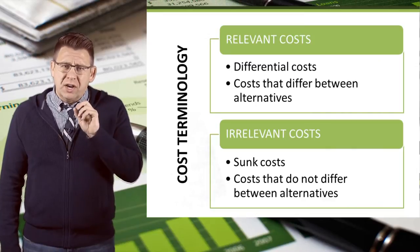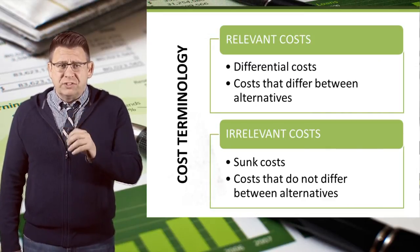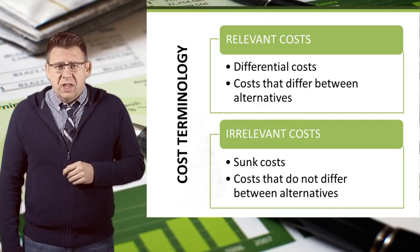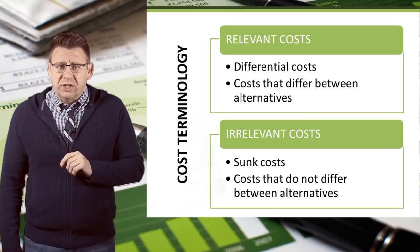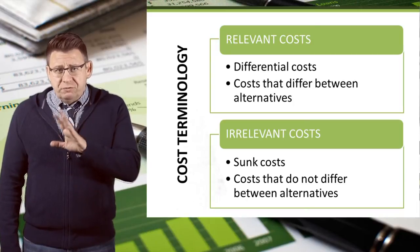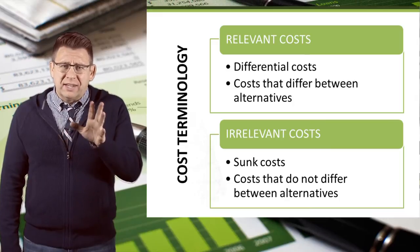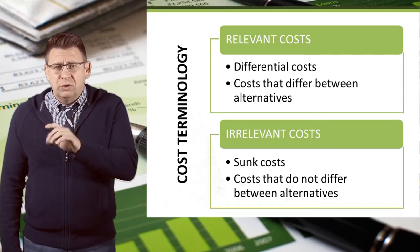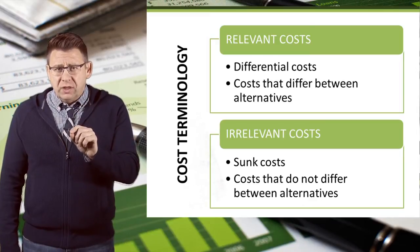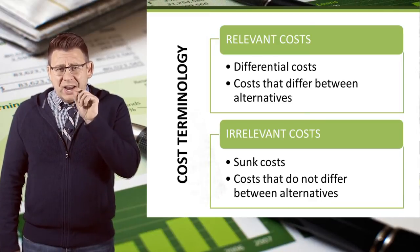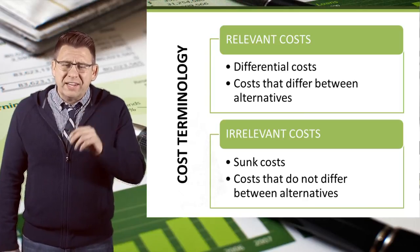Irrelevant costs are not important to decision making, but they are confusing to students. They are costs that do not differ between alternatives. For example, if you've decided on a new car but can't decide between a red one or a blue one — well, if the price is the same for both, it is then not relevant to your decision.